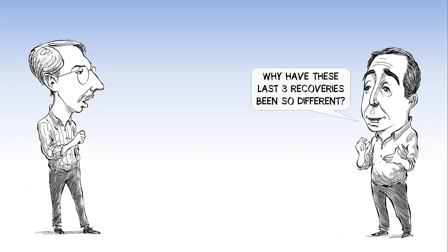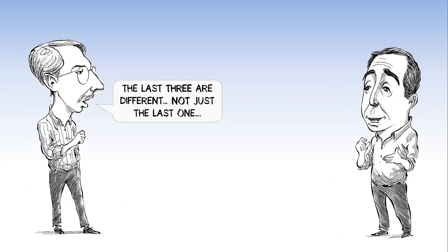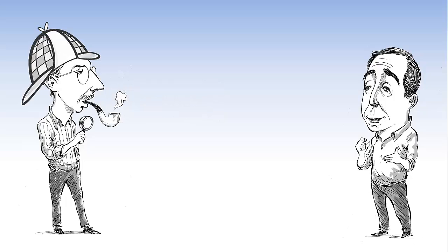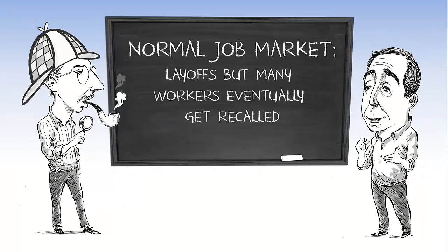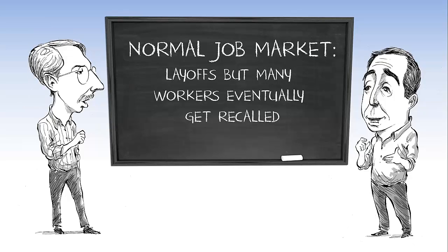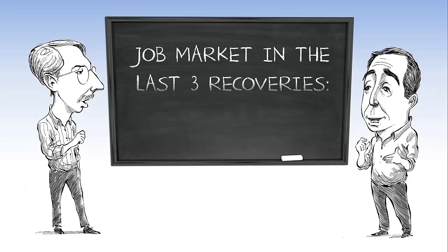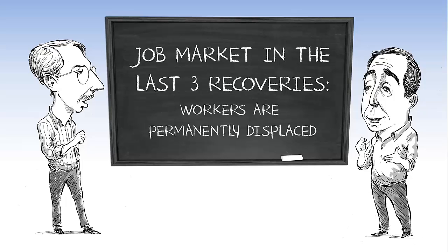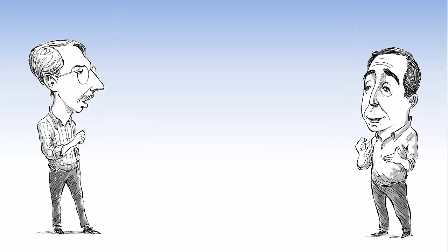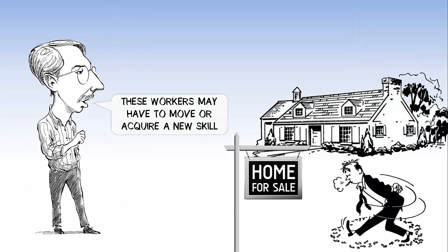So what's your explanation for why these last three recoveries have been so different? The critical thing is all three are here — it's not just this most recent one. If you're Sherlock Holmes, you're going to recognize the last three have been different, so you better have a story that applies to all three. Our take is that the normal job market has temporary layoffs followed by recalls, where individuals go back to exactly the same job they had before the recession. But in every one of these downturns, there are some permanent displacements where workers lose their jobs with no prospect of ever getting back that same job again.